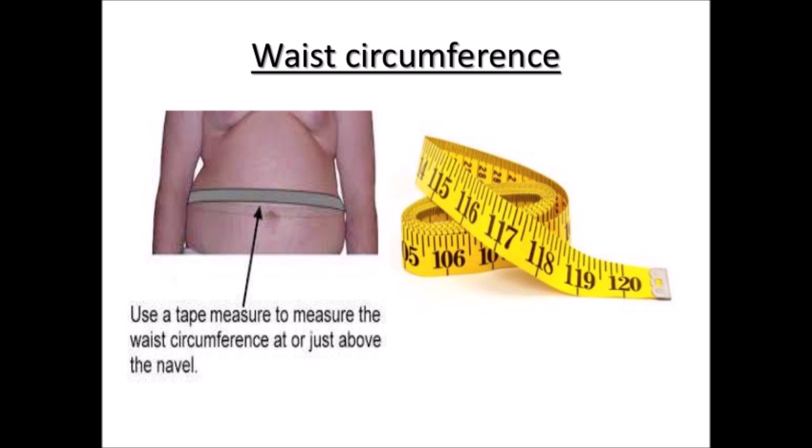To measure your waist size, take a measuring tape and place it around your belly button area. If that measurement exceeds 34 inches — which is half your height in inches — then you are at risk of getting diabetes. With this simple technique, you can easily determine whether you are in a pre-diabetic condition.